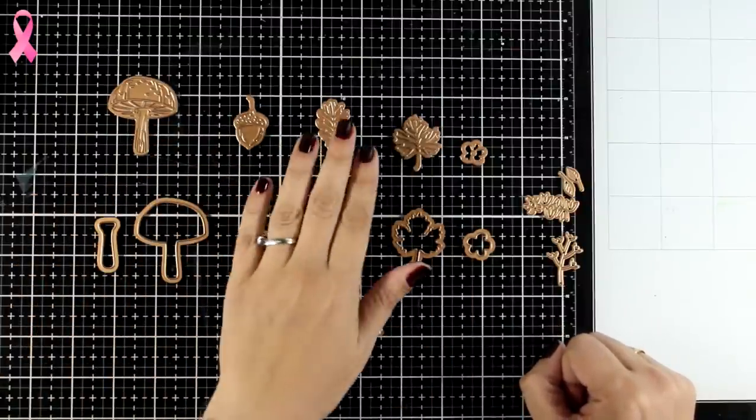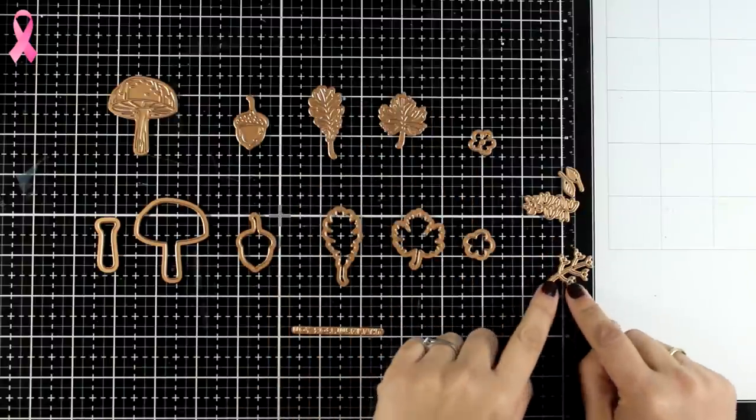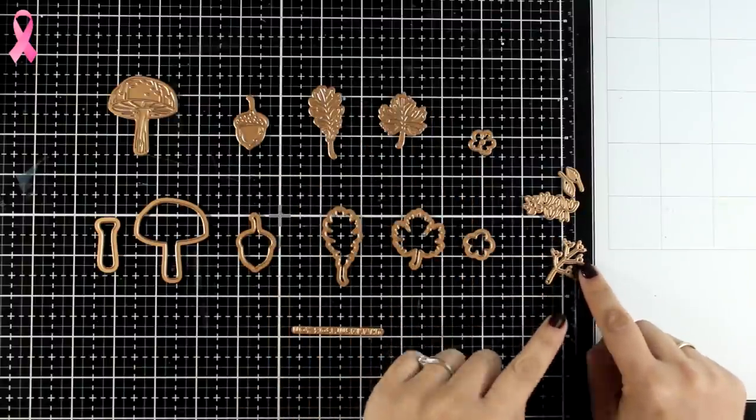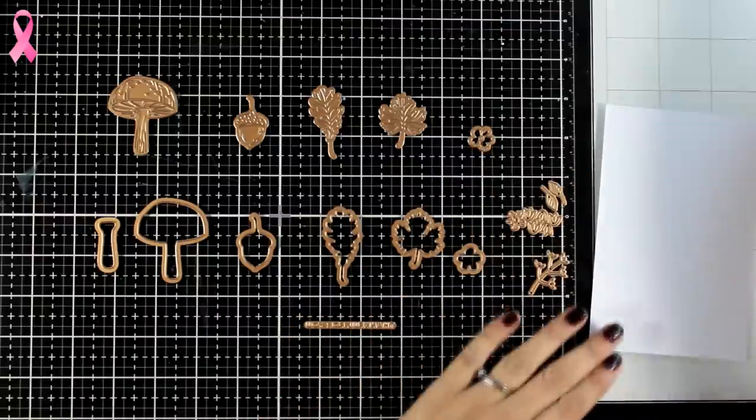You will get a mushroom, an acorn, lots of leaves, a sentiment for you to foil, and a copper foil roll which is perfect for the season.